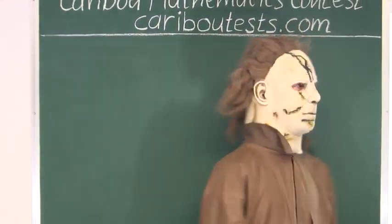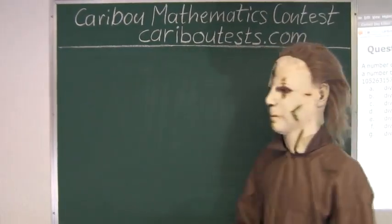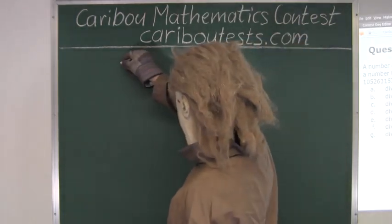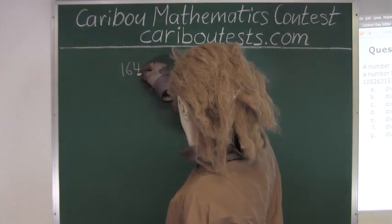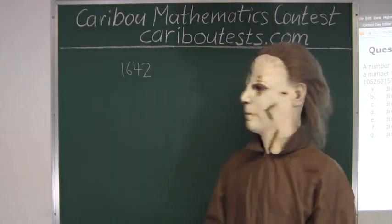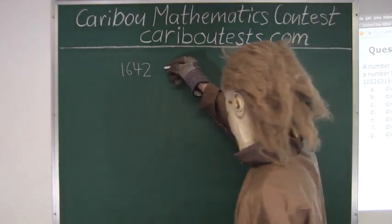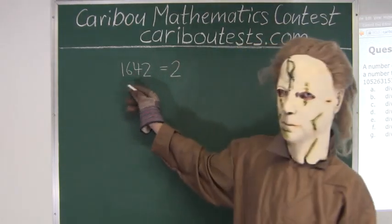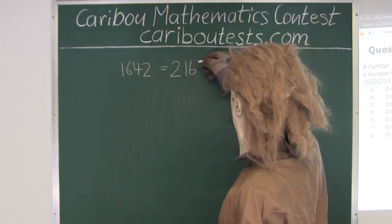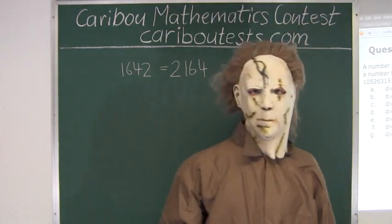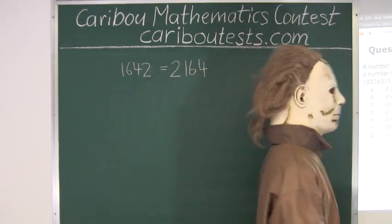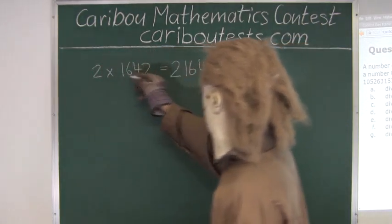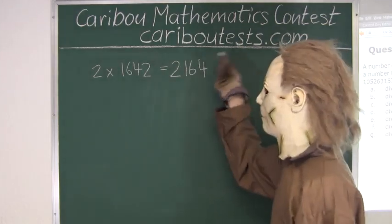So we know that the number must end in the digit 2. Let's take a random number, say 1642. If we would put the 2 to the front, then we would have 2164. We know from the question that if we move the digit 2 to the beginning, we obtain a number twice as large. So 2 times this number would equal this number, but of course in this case this is not true.